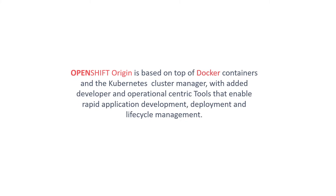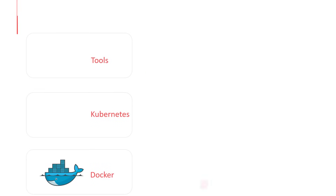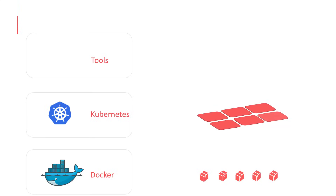To understand OpenShift Origin, we need to first understand Docker, Kubernetes, and the set of add-on tools provided by OpenShift. Docker is the fundamental technology that powers the development of containerized applications in the form of reusable images. Docker enables us to create an image of our application with all the required dependencies pre-packaged into images that can be instantly deployed in any environment. We will look more into Docker in an upcoming lecture.